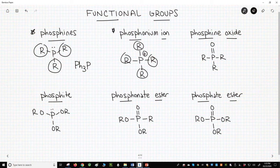Next example, because phosphorus is on the third row, it can have an expanded octet. If a phosphene with its three R groups gains a double bond from oxygen to phosphorus, it's called a phosphene oxide.